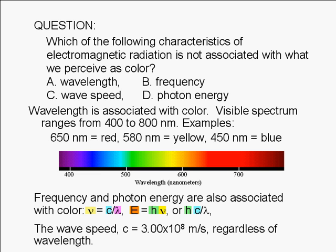The speed of an electromagnetic wave, on the other hand, is not related to wavelength, frequency, or photon energy. Its value is 3.00 times 10 to the 8th meters per second regardless. The correct answer is C.